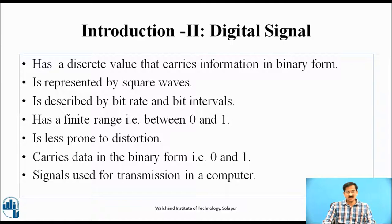A digital signal is used for transmission in a computer system. The meaning of transmission means the data can be stored in the form of 0s and 1s — it may be an image or information. Data can also be retrieved from a computer in the form of 0s and 1s. So all processing done in a computer is in the form of a digital signal, which is a stream of binary 0s and 1s.